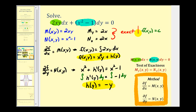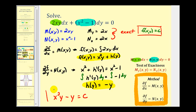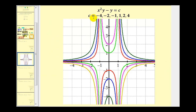Our solution is f of x,y equals c, so x squared y minus y equals c is the general solution to the given exact differential equation. This is a family of solutions, and we can show some specific solutions by selecting constants for c. Graphically, each color corresponds to one of the many solution curves of the exact differential equation.